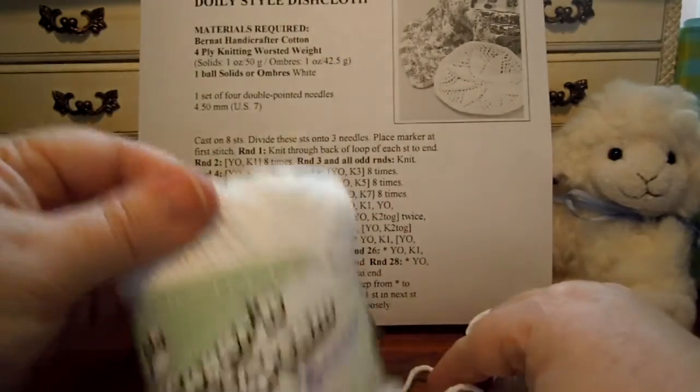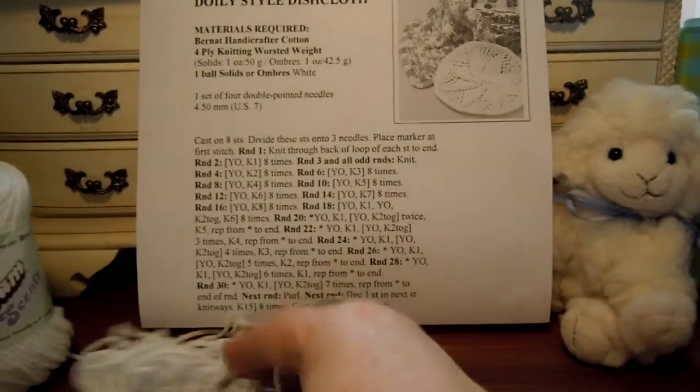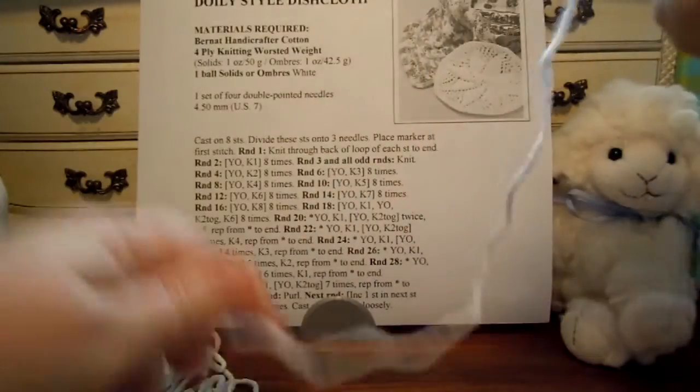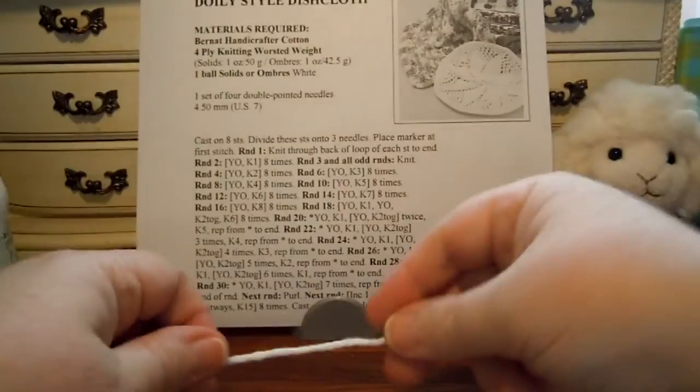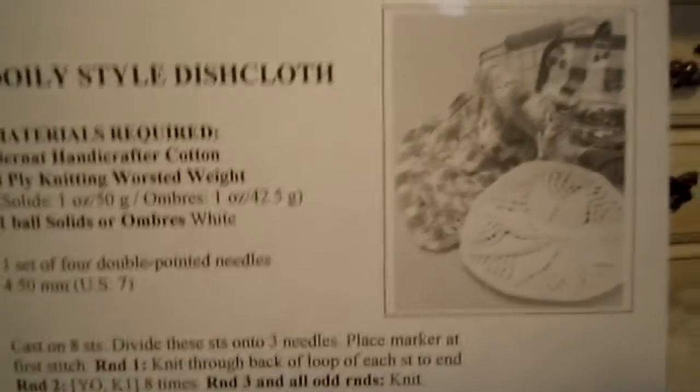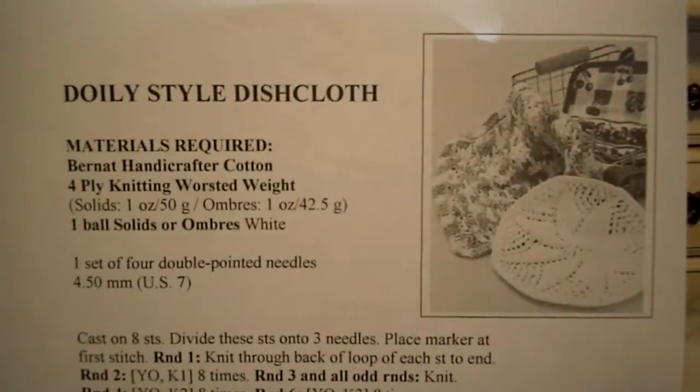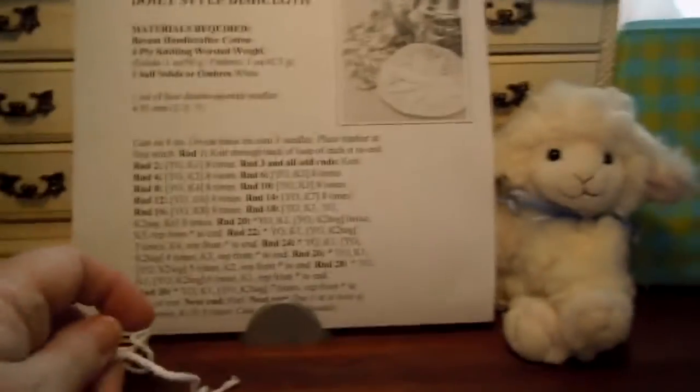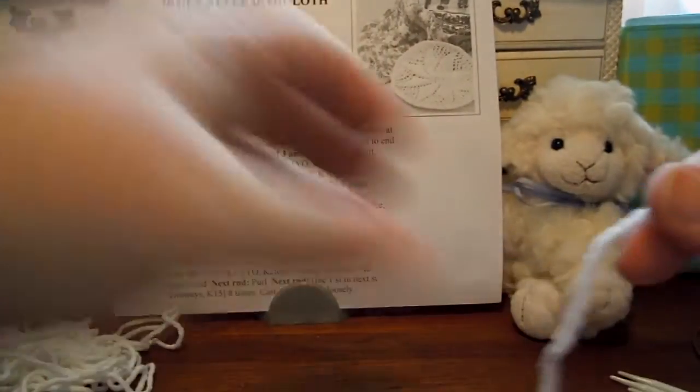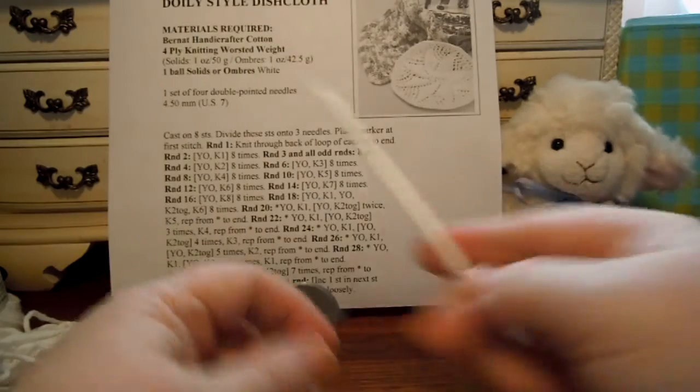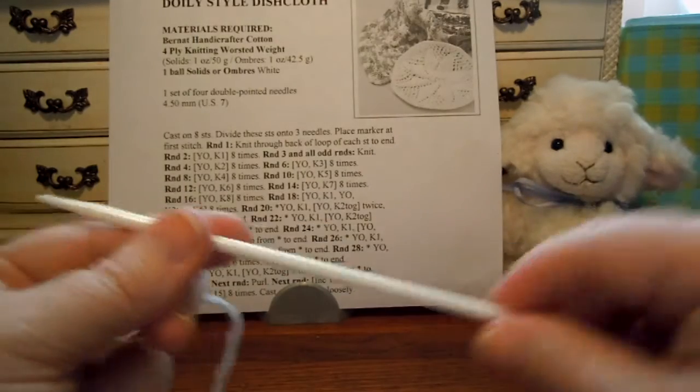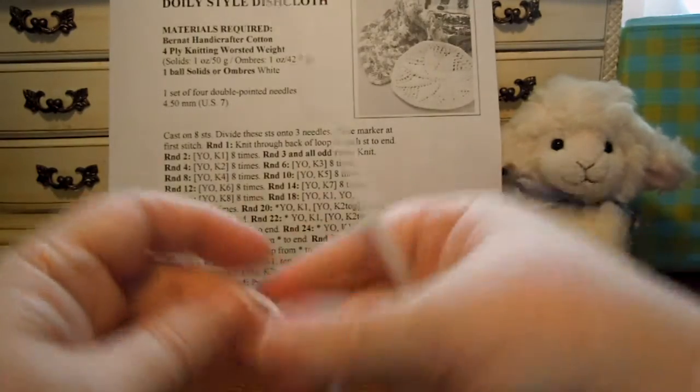I'm using Lily Sugar and Cream Scents in the color powder which is white because I want to have a white doily dishcloth. That's the pattern we're using for now. Doily style dishcloth is on the Yarnspirations website www.yarnspirations.com. So use your double pointed needle and it says to cast on eight stitches.